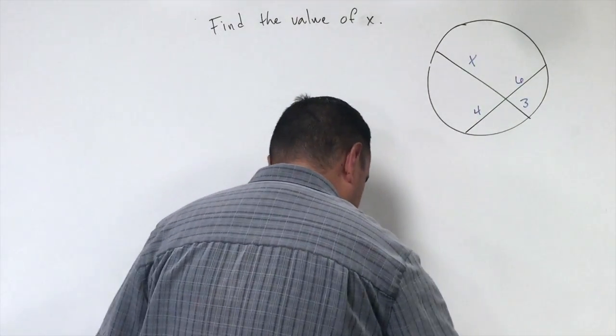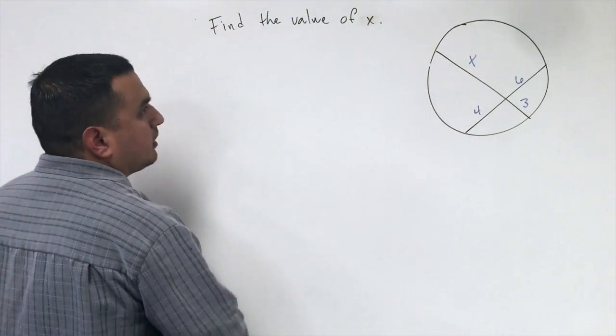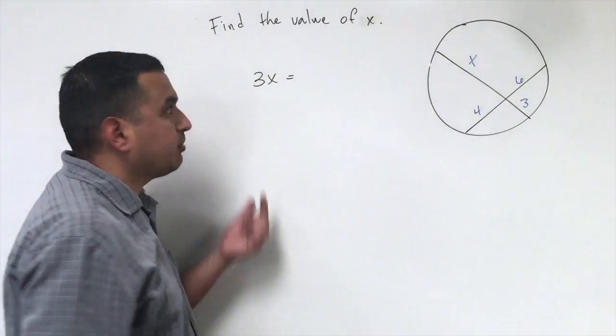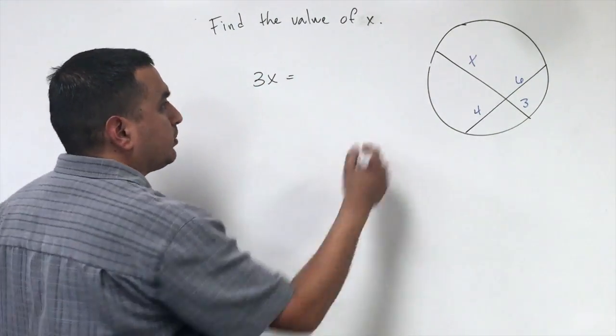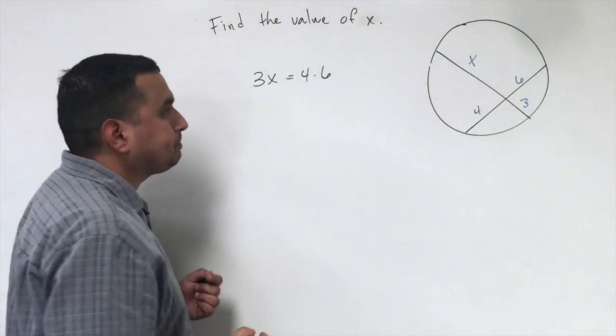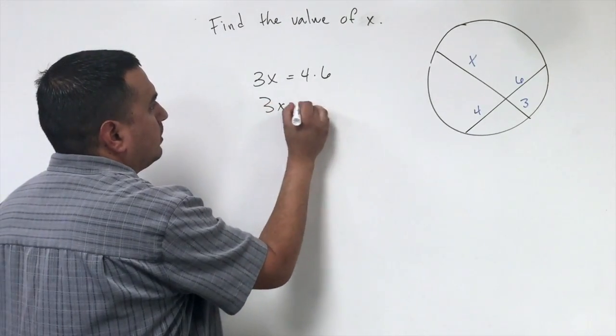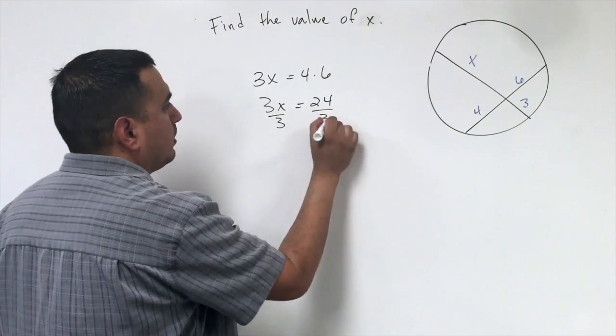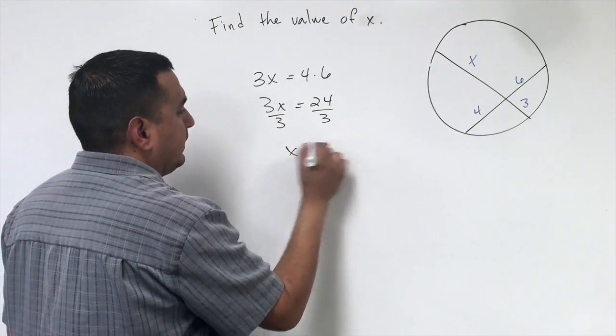So what the theorem says is that I can take the 3 times the x, and that's going to equal the product of 4 and 6. So that would be 4 times 6, that's 24. And then if I divide by 3, it tells me that x is equal to 8.